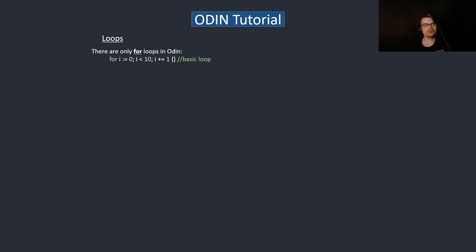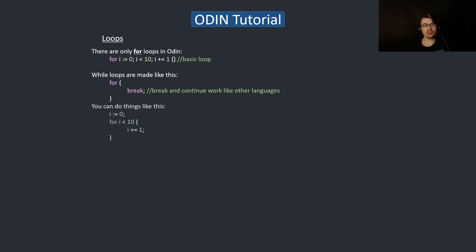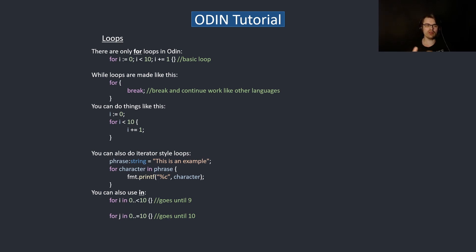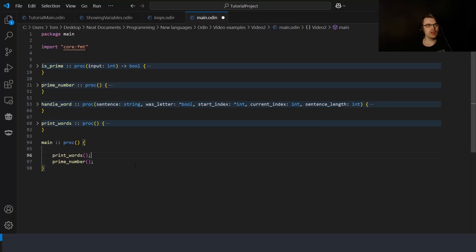While loops are made with just `for` and a condition — nothing different. Break and continue work like other languages. You can also declare `i` above and then write `for i < 10` with `i += 1`, which is basically the same as a standard for loop. You can also iterate over a string with `for character in phrase` to go through each character. For range-style loops, `for i in 0..<10` goes to 9, and `for i in 0..=10` goes to 10.